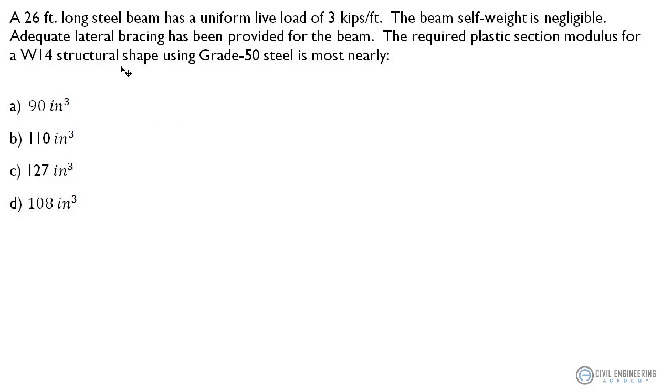A 26 foot long steel beam has a uniform live load of three kips per foot. The beam's self-weight is negligible. Adequate lateral bracing has been provided for the beam. The required plastic section modulus for a W14 structural shape using grade 50 steel is most nearly 90, 110, 127, or 108 inches cubed.